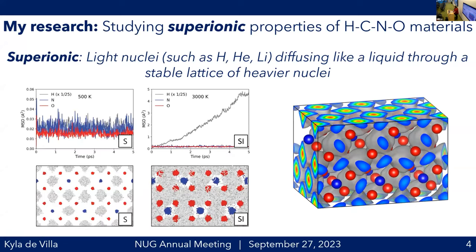Here are a couple of ways we can visualize super ionic diffusion. On the top left is an MSD plot — mean squared displacement — averaging how far atoms of a certain type have moved over time. We would expect the heavy elements to be virtually zero, which they are, while the protons show finite, linear diffusion with time, indicative of Brownian diffusion. You can also visualize these with the trajectories, shown on the bottom for the solid and super ionic phases. In the solid, protons vibrate around their potential wells but don't diffuse. In the super ionic phase, oxygen and nitrogen vibrate a lot more but remain fixed, while the protons flow pretty wildly throughout the cell.